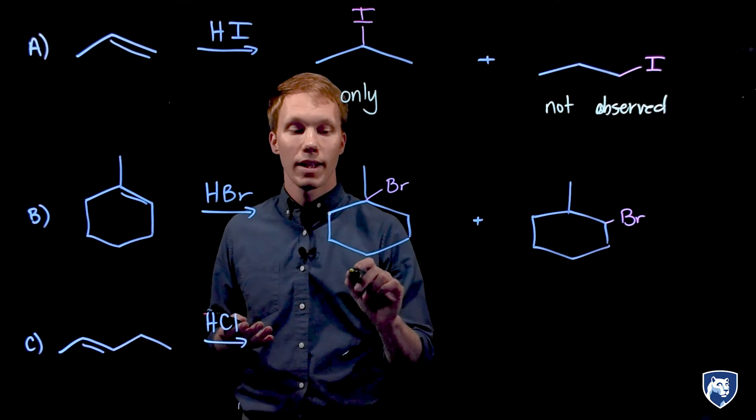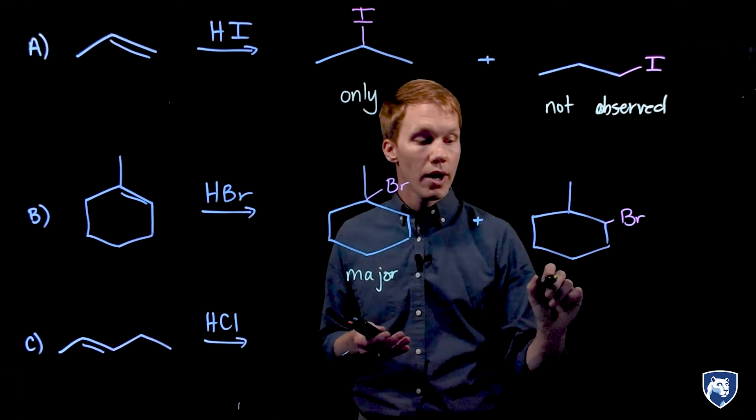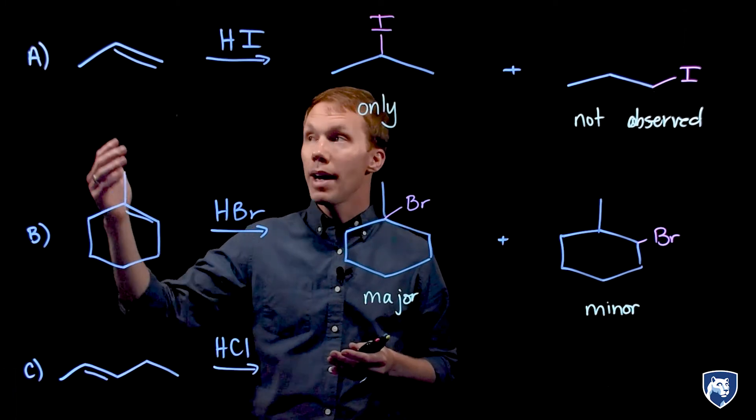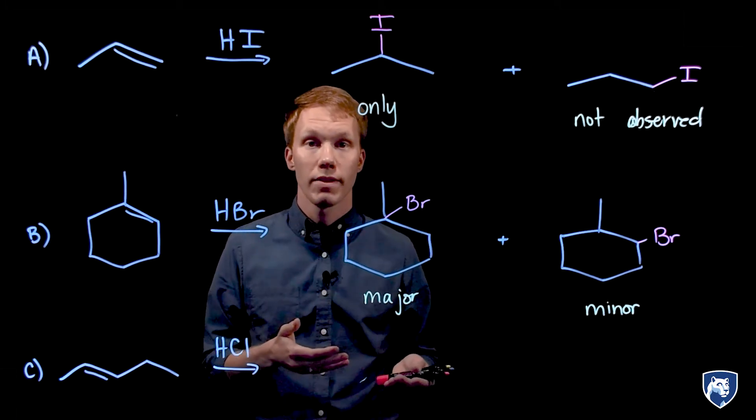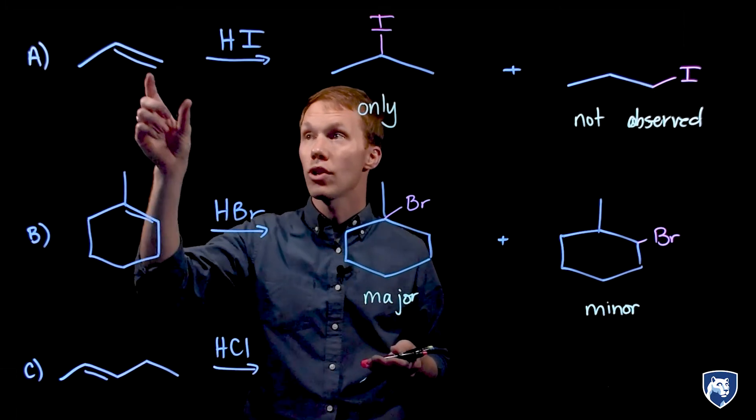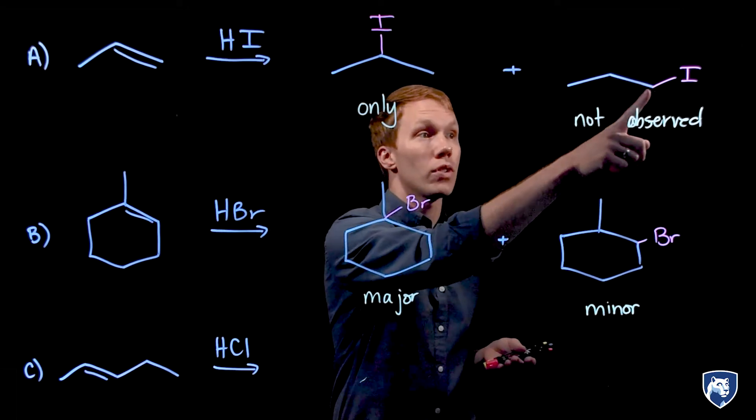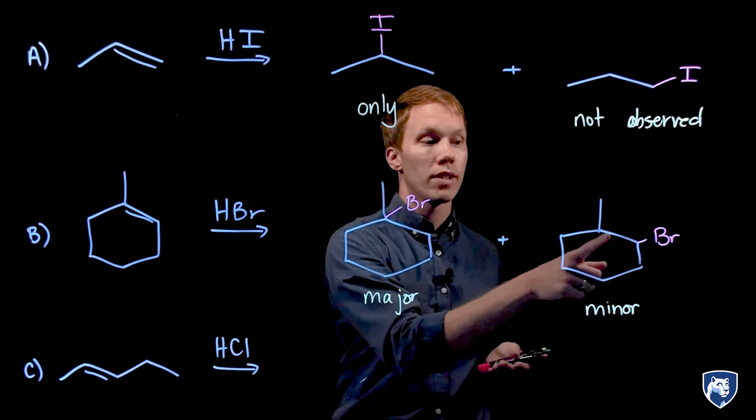What we find out in the lab is that our major product is the tertiary alkyl halide and the minor product is the secondary alkyl halide. In comparing reactions A and B, we can see that the degree of regioselectivity depends on the nature of our alkene. Here we're deciding between a secondary alkyl halide versus a primary alkyl halide and in example B it's tertiary versus secondary.